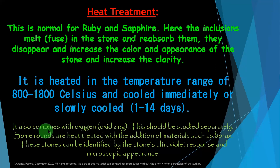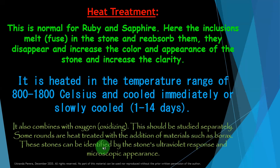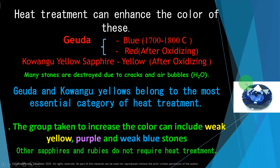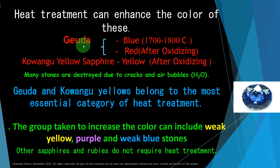Heat treatment also involves oxidizing — combining with oxygen. Some stones are heat treated with the addition of materials such as borax. These stones can be identified by their ultraviolet response and microscopic appearance. Heat treatment can enhance the color of the stone. If it is a blue geuda, the temperature should be between 1700 and 1800 degrees Celsius.